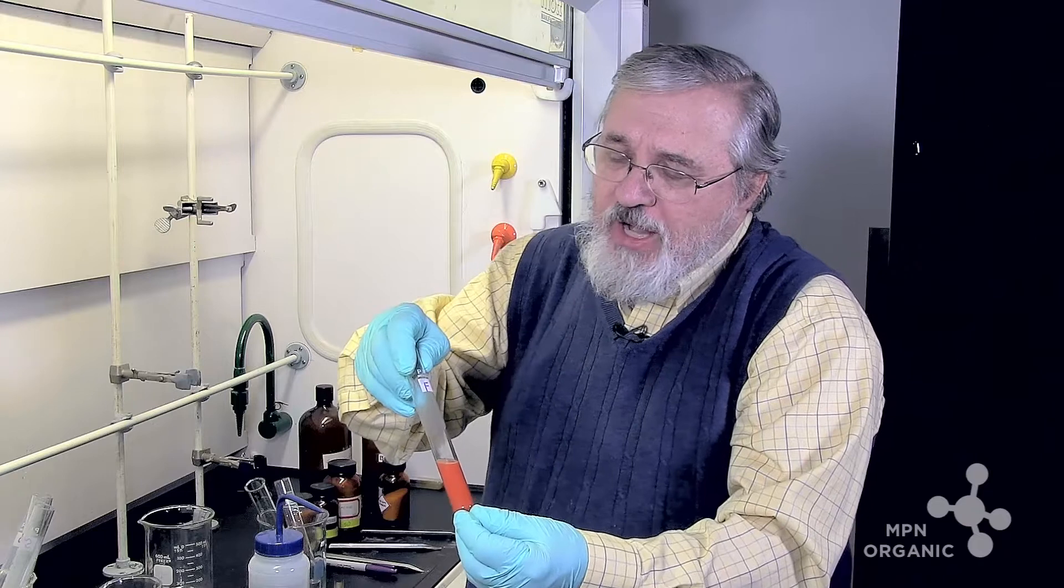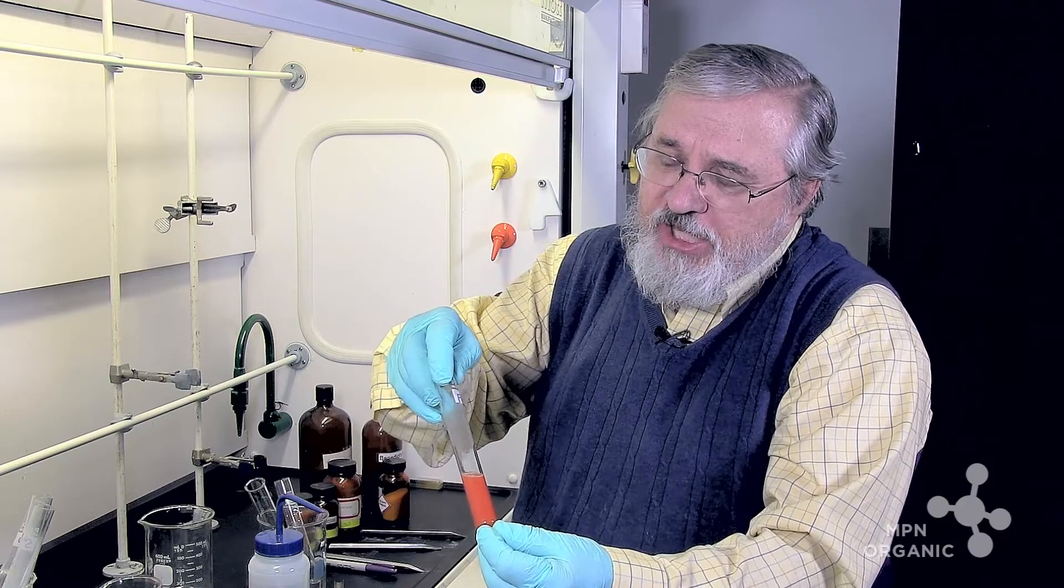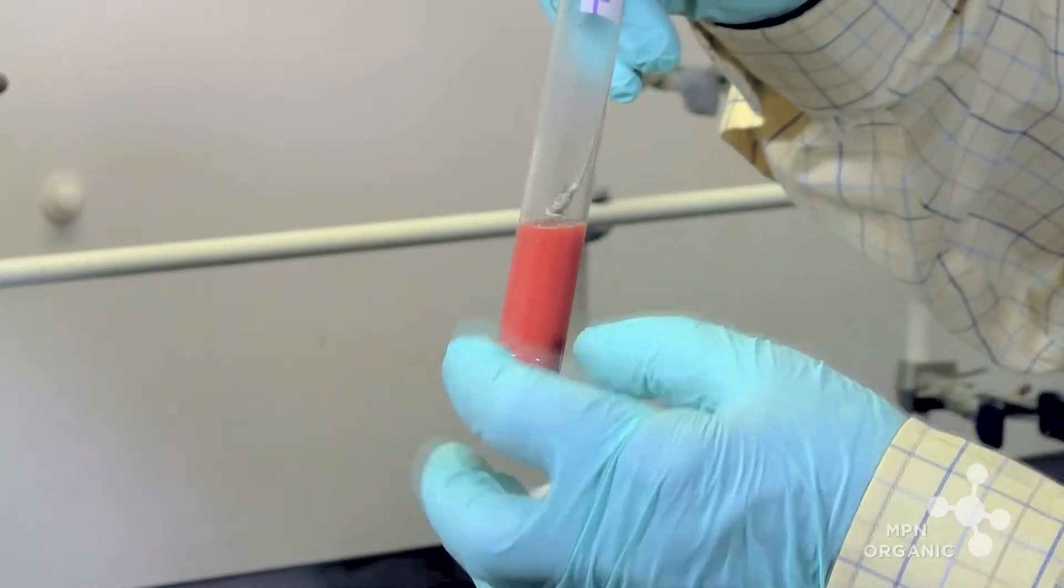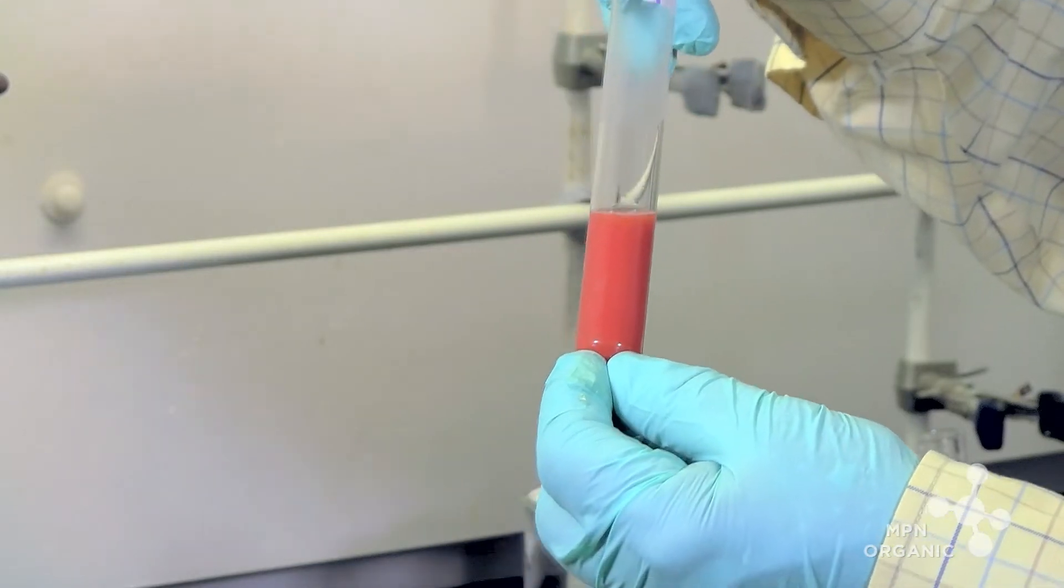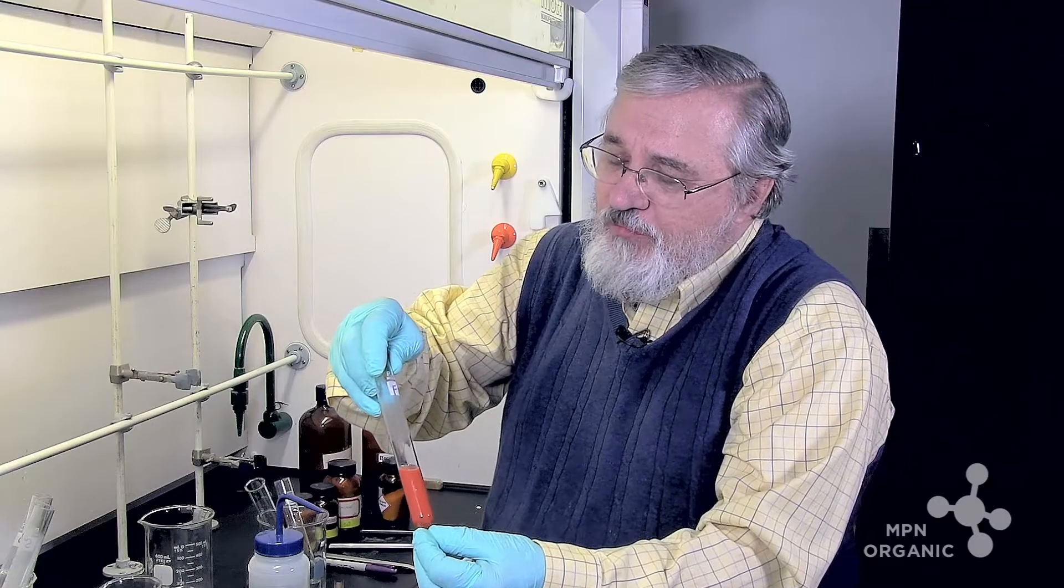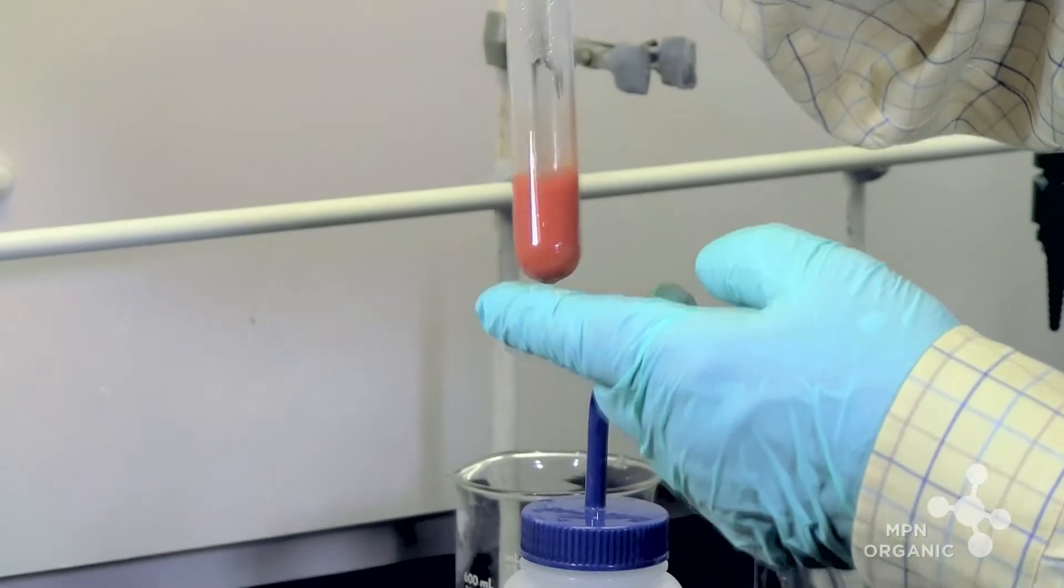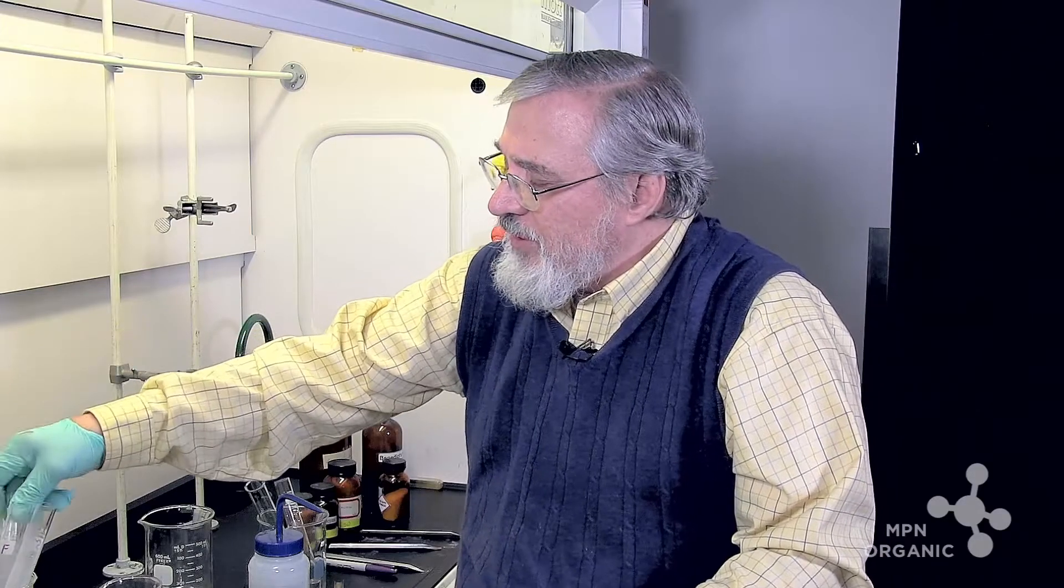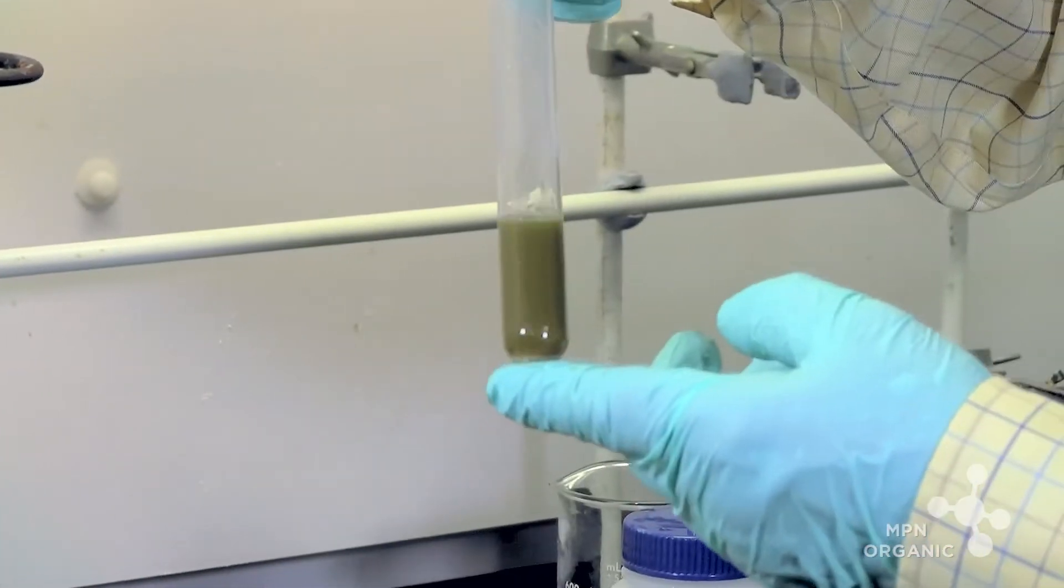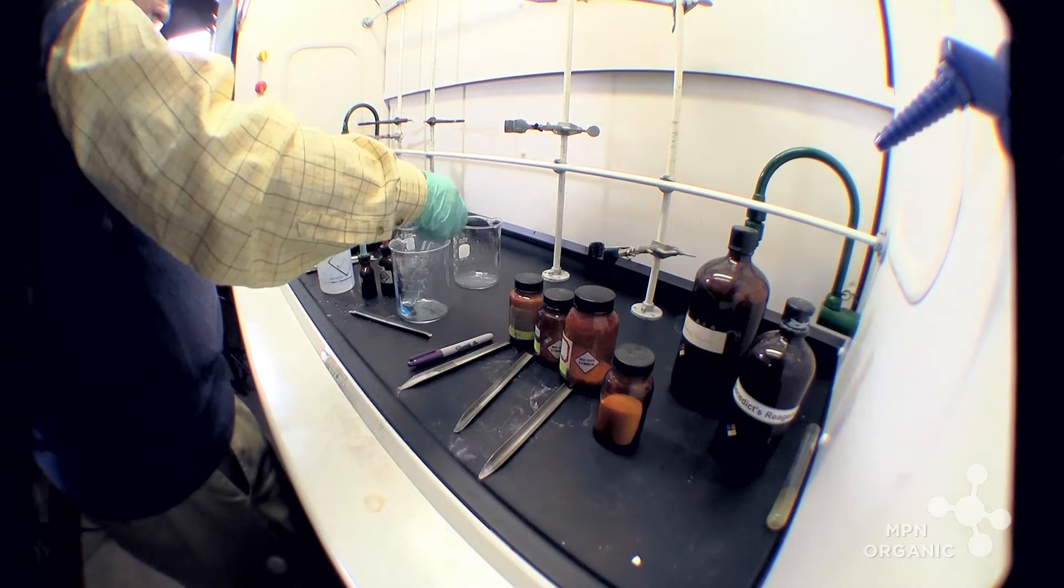That's the copper one oxide precipitate that's formed. So we say that copper two ion has been reduced to copper one ion. And this change is very evident from the blue to orange color. This indicates that fructose has reduced copper two to copper one. Therefore, we call fructose a reducing sugar. You can see here glucose is almost the same.